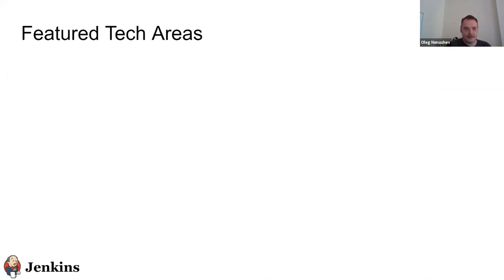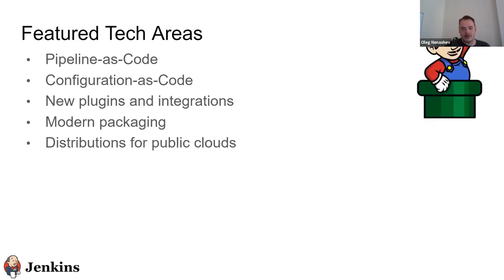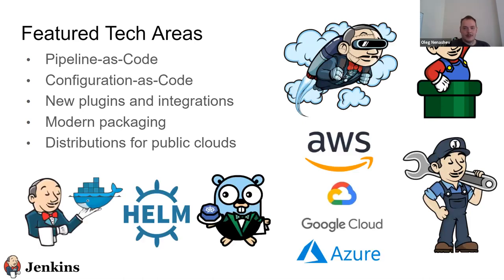Some key tech areas based on recent technologies: pipeline as code, new plugin integrations, modern packaging such as Helm charts and Kubernetes, and various distributions. If you want to present any new technology or solution for Jenkins, whether open source or not, it's a good opportunity. For the community track we rather target open source, but there are other tracks that welcome any kind of talk.